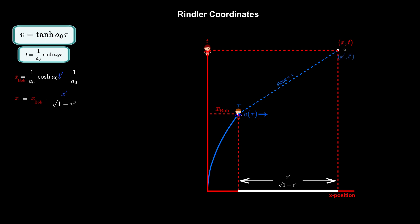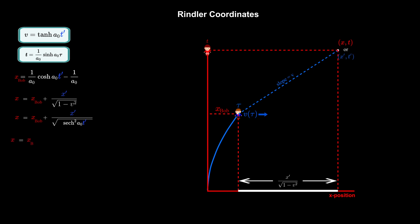But Bob's velocity is equal to hyperbolic tan of a-not tau. Or using Bob's coordinate time t', Bob's velocity is hyperbolic tan of a-not t', because t' and tau are equivalent. So we can rewrite the denominator as the square root of 1 minus hyperbolic tan squared a-not t'. Now 1 minus hyperbolic tan squared a-not t' is hyperbolic secant squared a-not t'. So the equation becomes x equals x-Bob plus x' hyperbolic cosine a-not t'. Substituting in the equation for x-Bob gives x equals 1 over a-not hyperbolic cosine a-not t', minus 1 over a-not, plus x' hyperbolic cosine a-not t'. Collecting like terms, we arrive at x equals x' plus 1 over a-not, hyperbolic cosine a-not t', minus 1 over a-not.